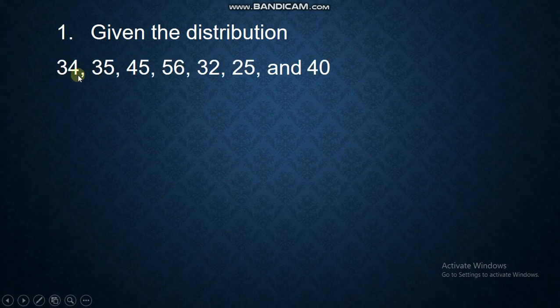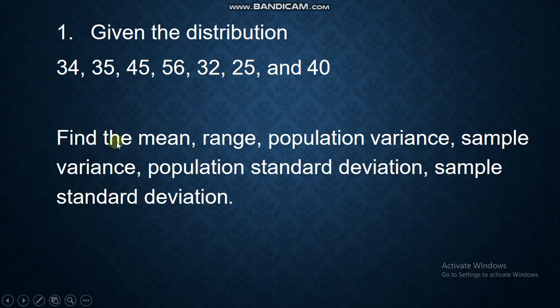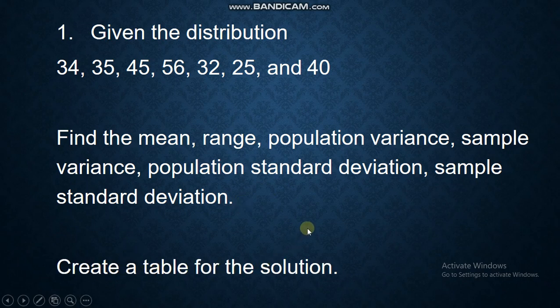Let's have this problem. Given the distribution 34, 35, 45, 56, 32, 25, and 40, find the mean, range, population variance, sample variance, population standard deviation, sample standard deviation. Create a table for this solution.